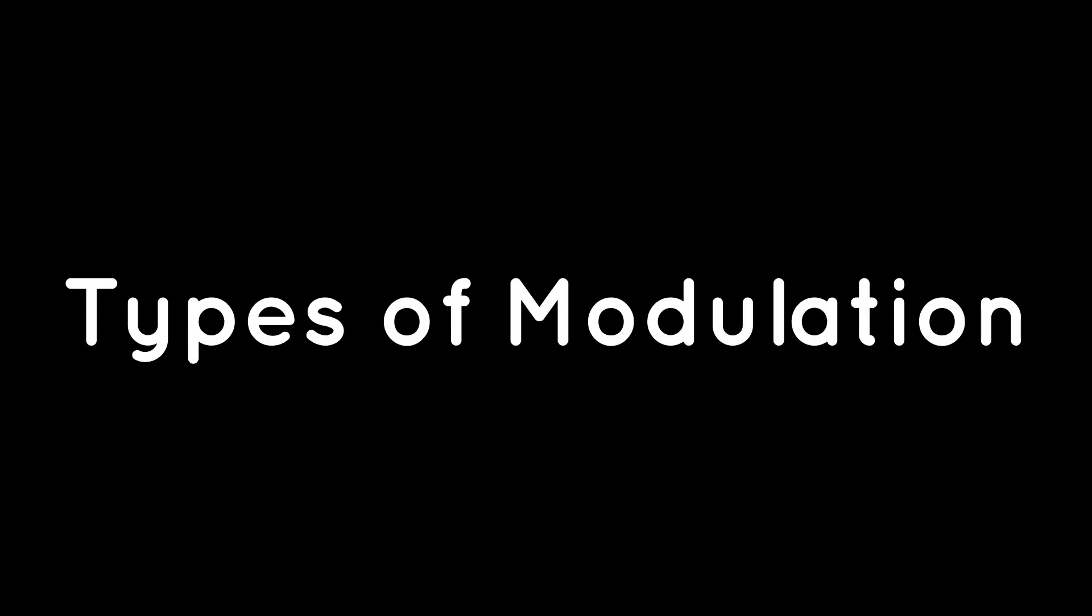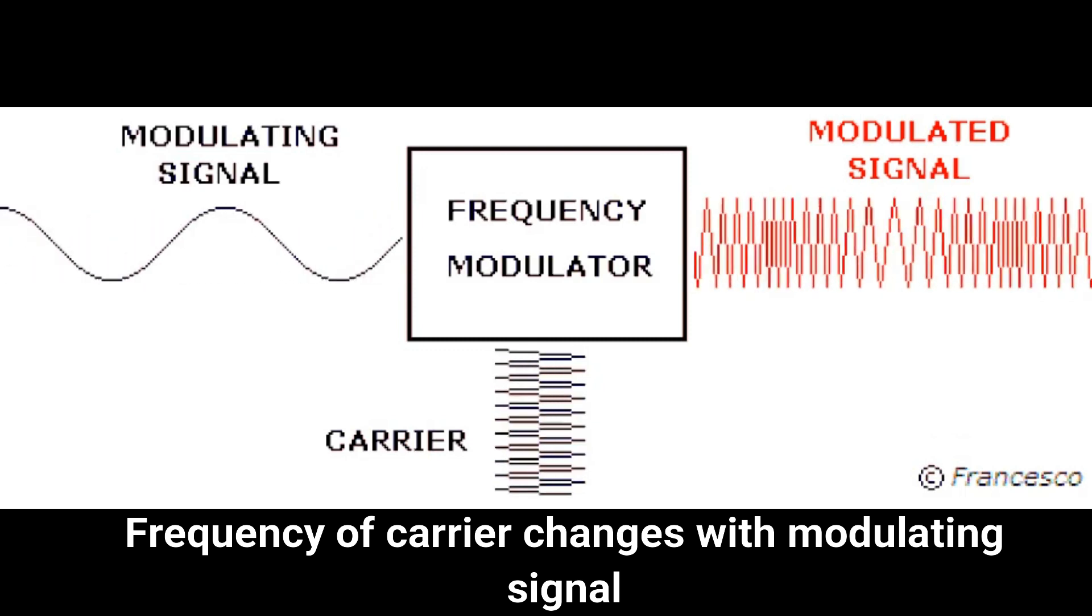Now let's take a look at the three basic types of modulation. Frequency modulation: in this type of modulation, frequency of the carrier signal will be altered with respect to modulating signal. As a result, we will obtain modified frequency signal in output.